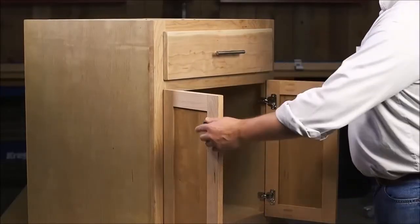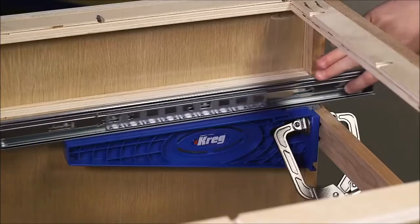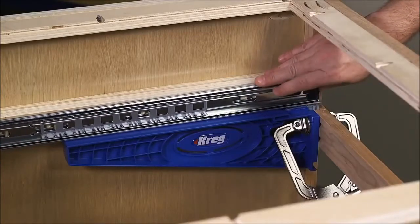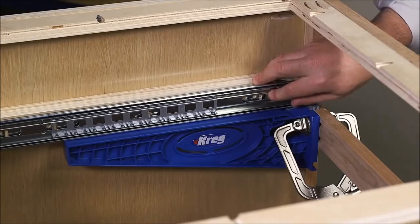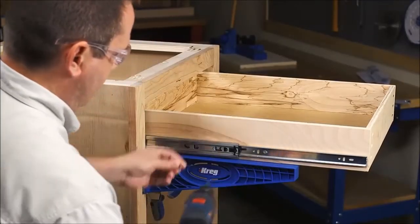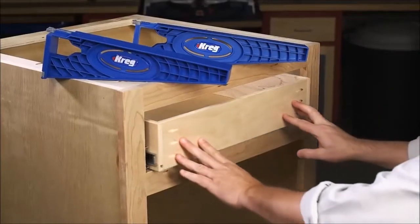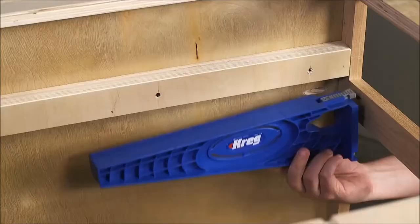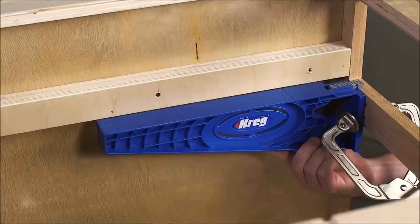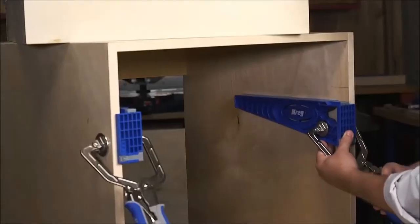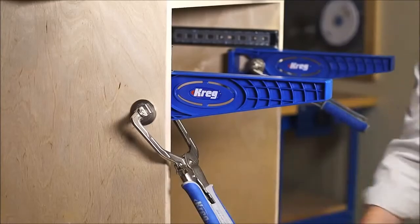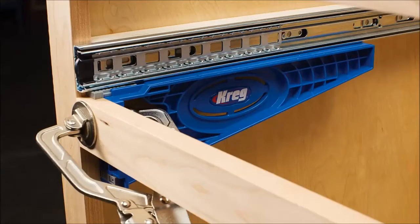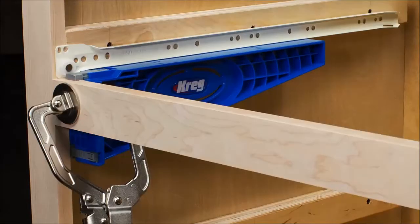The jig makes it easier for anyone to install drawers that fit right and glide smoothly every time by securely supporting the slide in the exact position needed. It supports the drawer boxes as well to ensure perfect alignment. Whether you're installing drawers in a cabinet with face frames or without frames, the versatile drawer slide jig clamps in place easily and works with ball bearing, epoxy coated, and undermount slides.